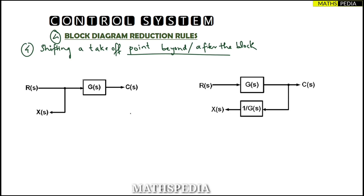In this video we'll be discussing the fourth rule of block diagram reduction. The first rule says that shifting a takeoff point beyond or after a block — so after the block we are going to shift. In this first case, observe here: R(s) is the input and C(s) is the output.